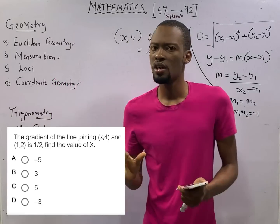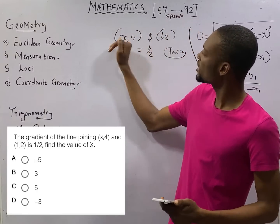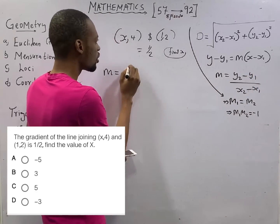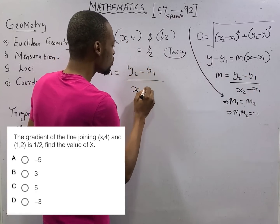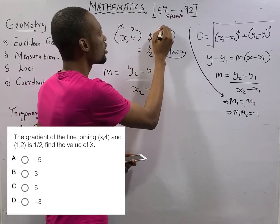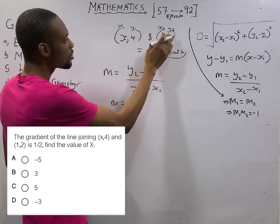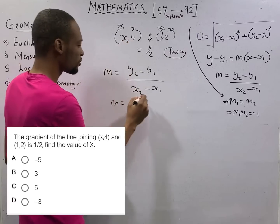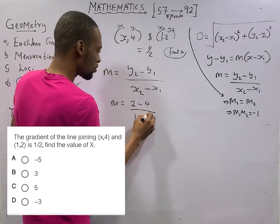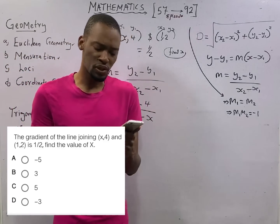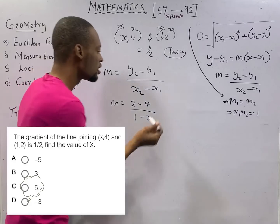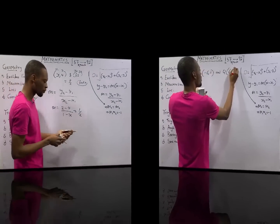Ladies and gentlemen, if normally we are given these two coordinates to find the gradient, I told you that gradient m, in fact you can see that here, is (y₂ - y₁)/(x₂ - x₁). The gradient would be: here is x₁, y₁, x₂, y₂. Y₂ is 2 minus y₁ is 4 over x₂ is 1 minus x₁ is x. We are looking for x. But I have good news for you. They gave us the gradient, which means gradient equals (2 - 4)/(1 - x) equals 1/2.